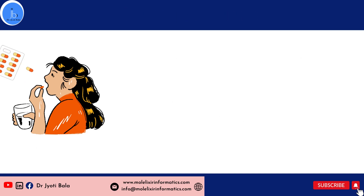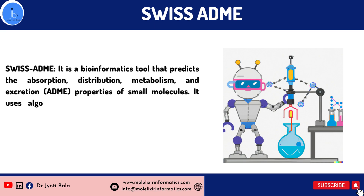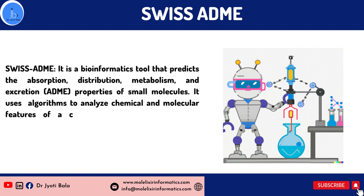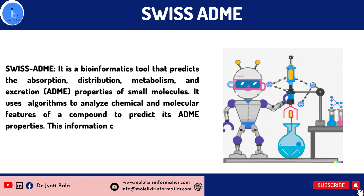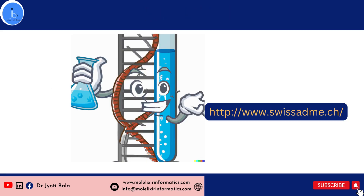These crucial pieces of information will help us to design a safe and effective drug. For predicting such parameters, you can use Swiss ADME. It analyzes the chemical and molecular features of the compound to predict its ADME properties. This information can be used to guide the design and development of new drugs.